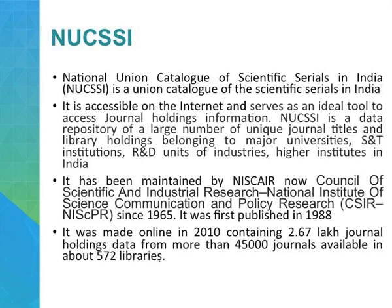The National Union Catalogue of Scientific Serials in India is a union catalogue of scientific serials in India. It is accessible on the internet and serves as an ideal tool to access journal holdings information. It is a data repository of a large number of unique journal titles and library holdings belonging to major universities, science and technology institutions, research and development units of industries, and higher educational institutions in India. It has been maintained by NISAIR, now the Council of Scientific and Industrial Research — National Institute of Science Communication and Policy Research — since 1965. It was first published in 1988 and made online in 2010, containing 2.67 lakh journal holdings, data from more than 45,000 journals available in about 572 libraries.